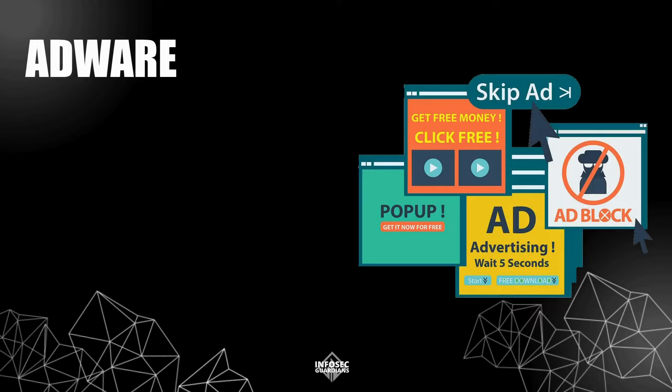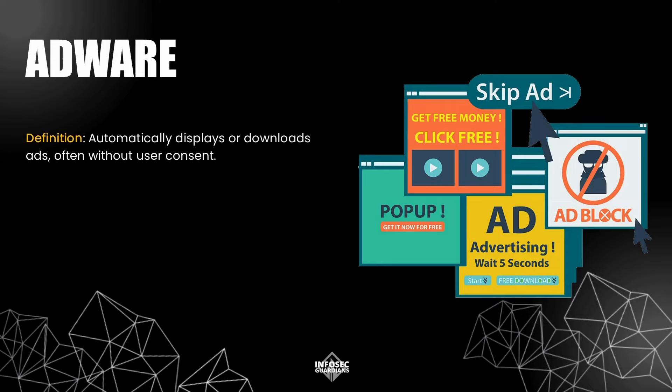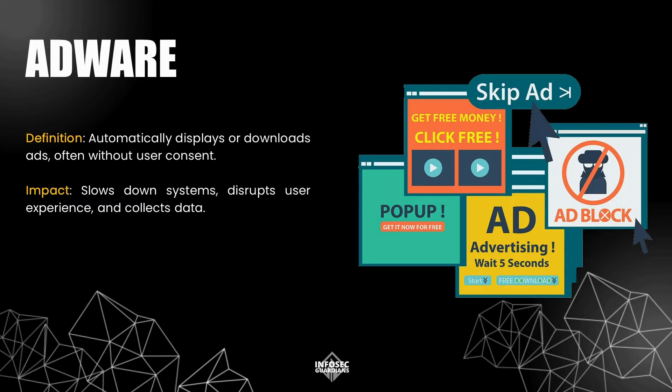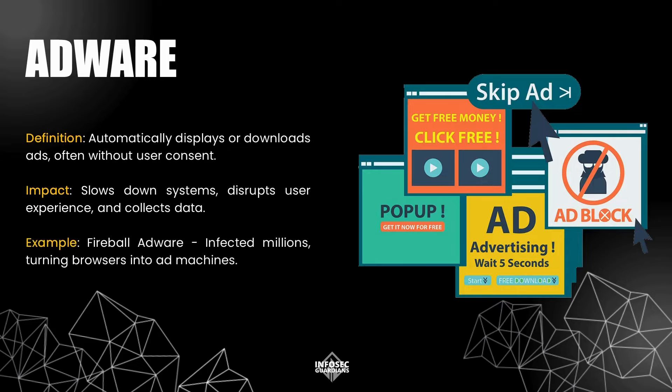Adware is a bit different from what we've discussed so far. Adware automatically displays or downloads advertisements, usually without the user's consent. While it's often considered less harmful than other types of malware, it can still be quite disruptive. Adware can slow down your system, disrupt your user experience, and even collect data about your browsing habits. An example of this is the Fireball Adware, which turned millions of web browsers into ad machines, hijacking users' search engines and displaying unwanted ads.